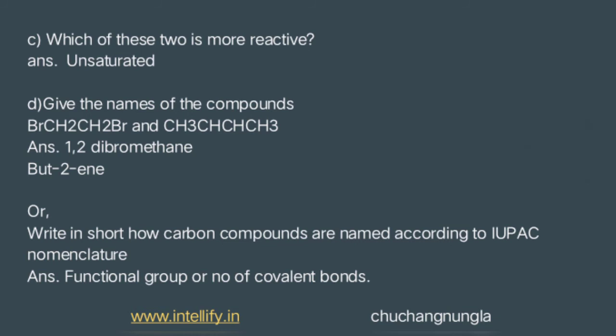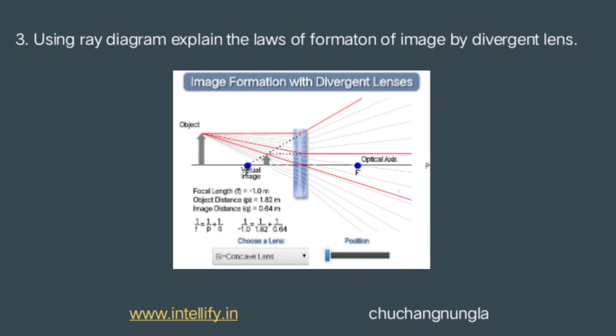Unsaturated hydrocarbons are more reactive because of the presence of double and triple bonds between them. D. Give the names of the compounds. The compounds will be: number one — 1,2-dibromoethane, and number two — but-1-yne. E. Write in short how carbon compounds are named according to IUPAC nomenclature. They are named after the functional groups present in them or with the aid of the number of covalent bonds in them.